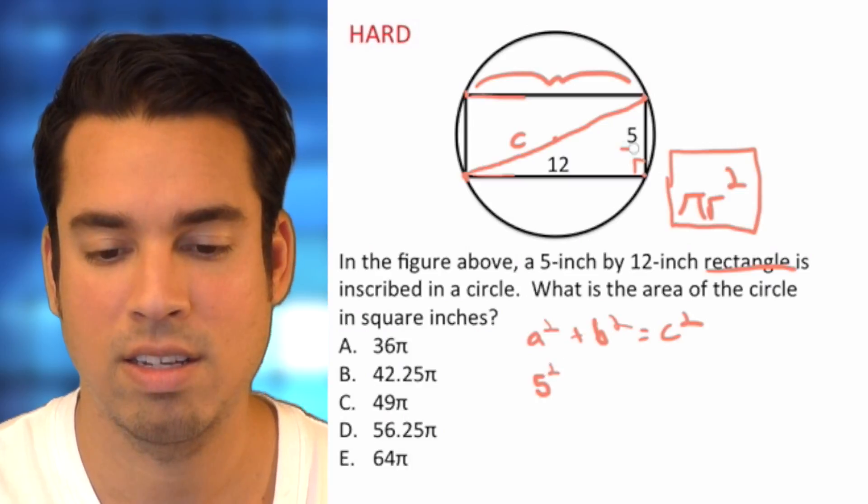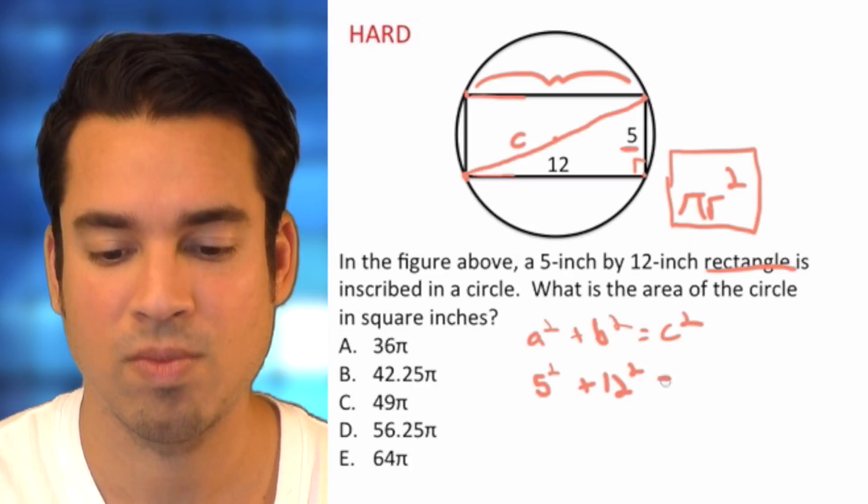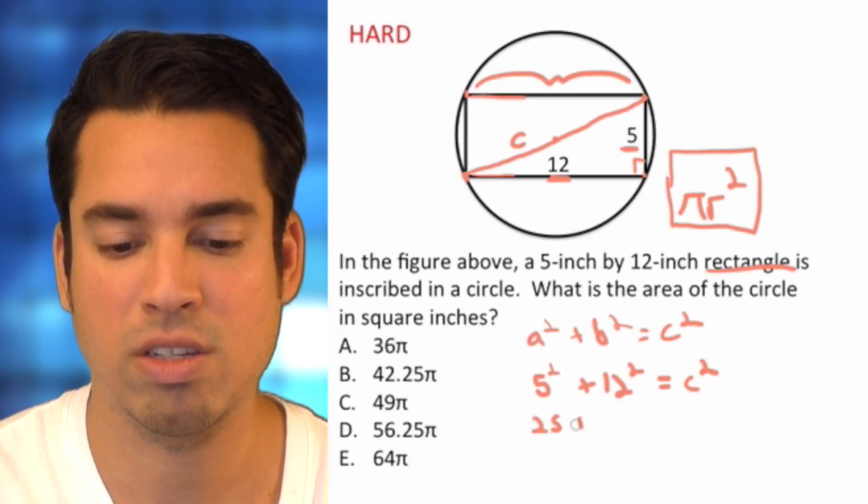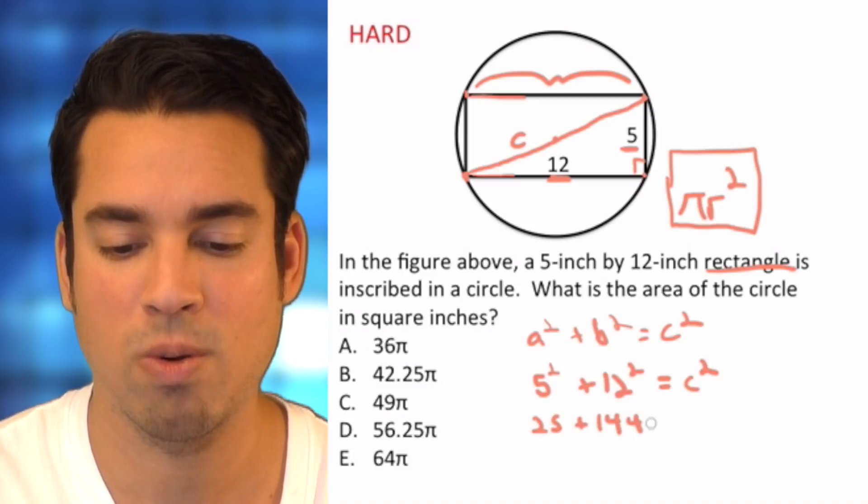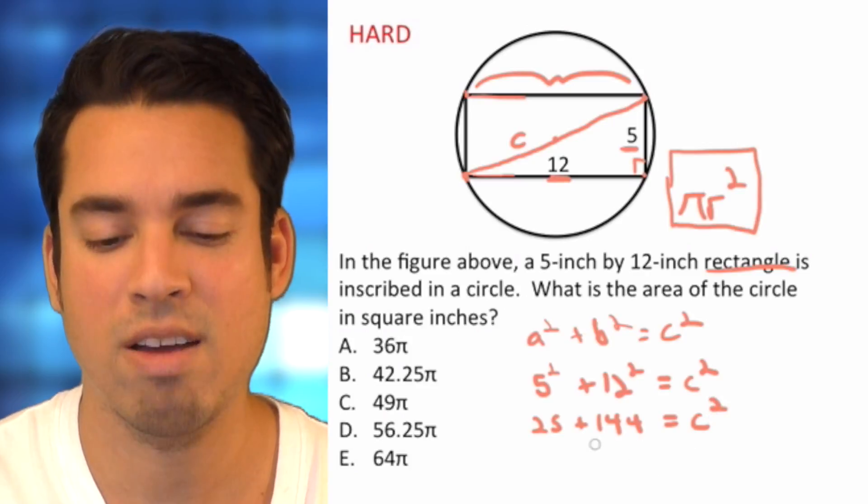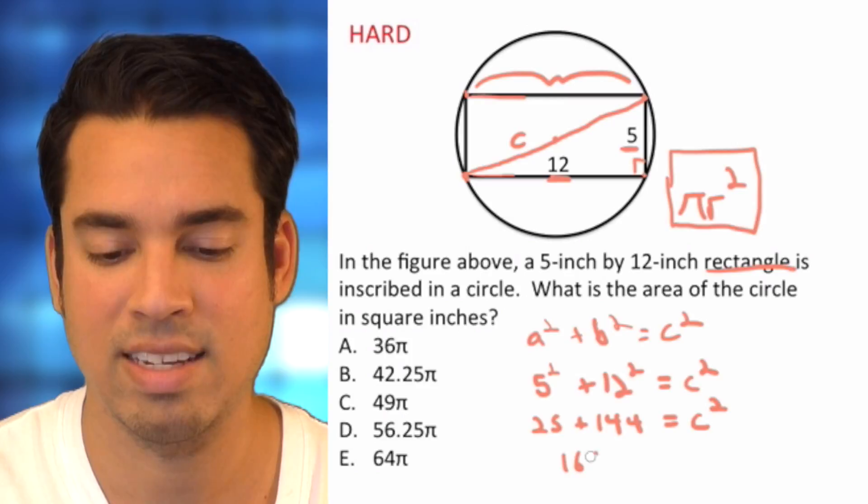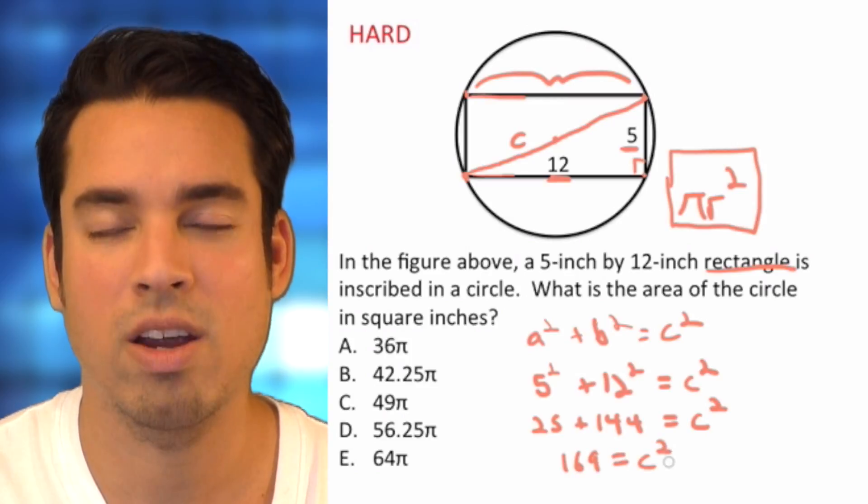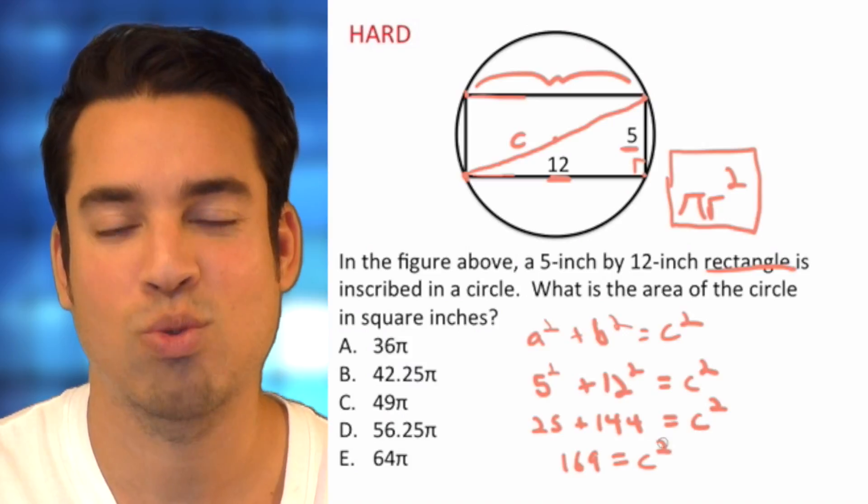That's one of the legs here, plus b squared which is 12 squared, equals c squared. So this becomes 25 plus 144 equals c squared. Very nice. What is 25 plus 144? That is 169, and this equals c squared.